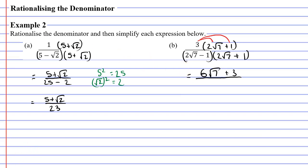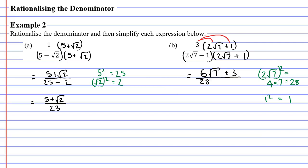Let's focus on our denominator now. Our two terms are 2 root 7 and 1 — the same two terms for each set of brackets — and we need to square both of them separately. Starting with 2 root 7: 2 times 2 is 4, and when we square a square root we go back to the original number, so we get 4 times 7, which is 28. The other term is 1 — 1 squared is simply 1. So we get 28 and 1, and it's always a subtraction symbol between them. Our denominator is 28 minus 1, or 27.